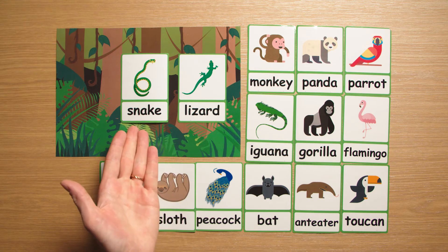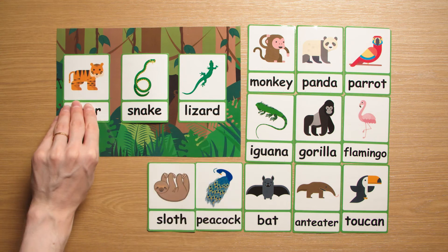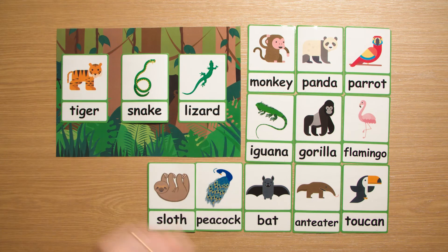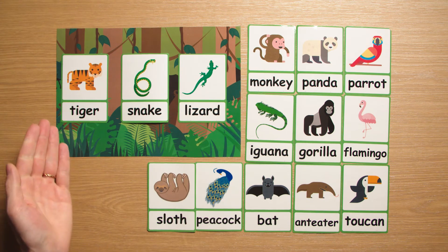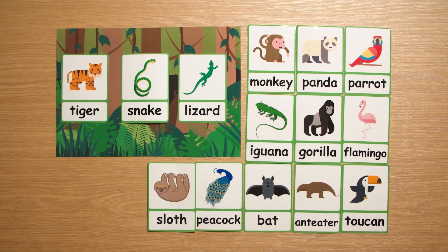A snake eats a lizard, and a tiger eats a snake. Be sure to do your own research to find out what animals eat what, and then teach it to your children.